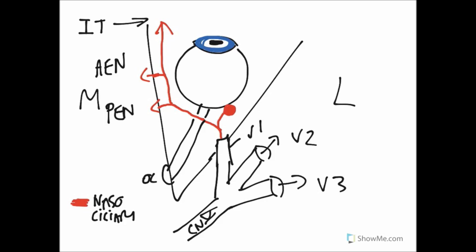Following the nasociliary nerve along its course, it gives off what are known as long ciliary nerves. The ciliary ganglion gives off what are known as short ciliary nerves. Parasympathetics always travel via the ciliary ganglion, and the postganglionic fibers travel in short ciliary nerves. The long ciliary nerves carry sympathetics to the eye, going to the dilator pupillae muscle in order to dilate the iris.